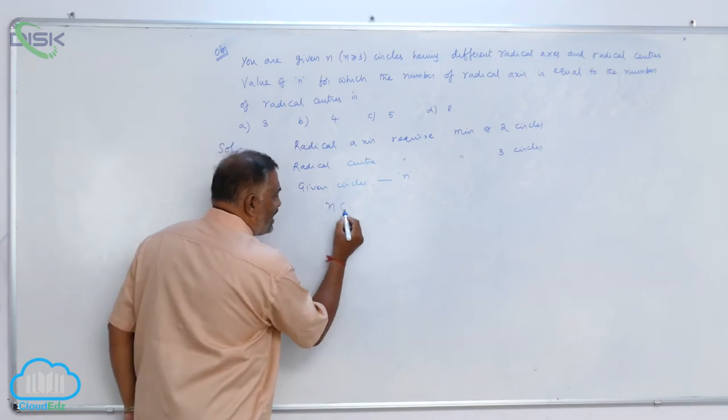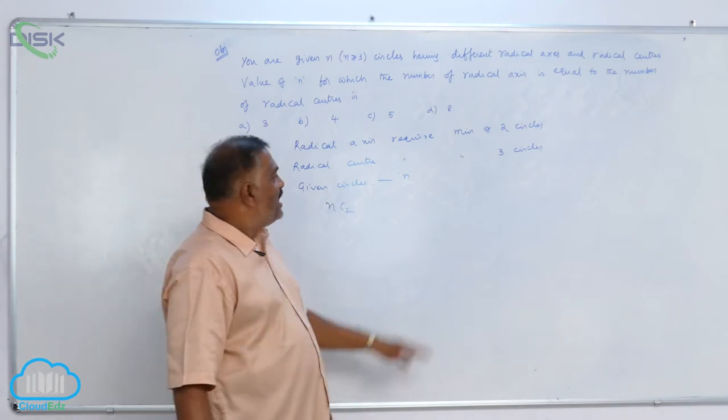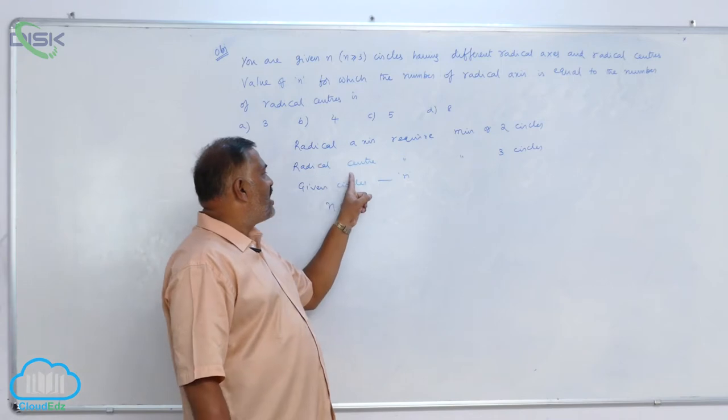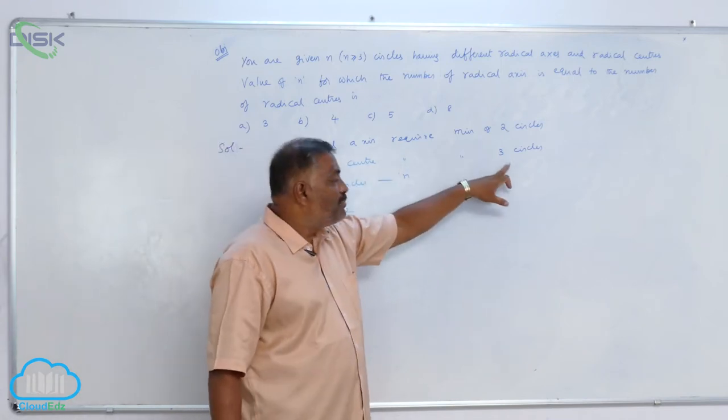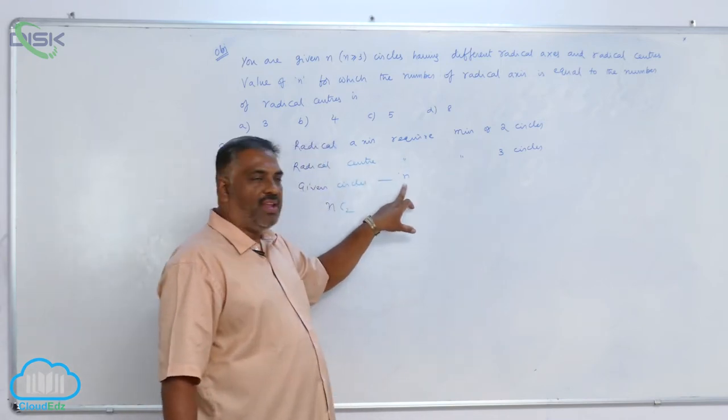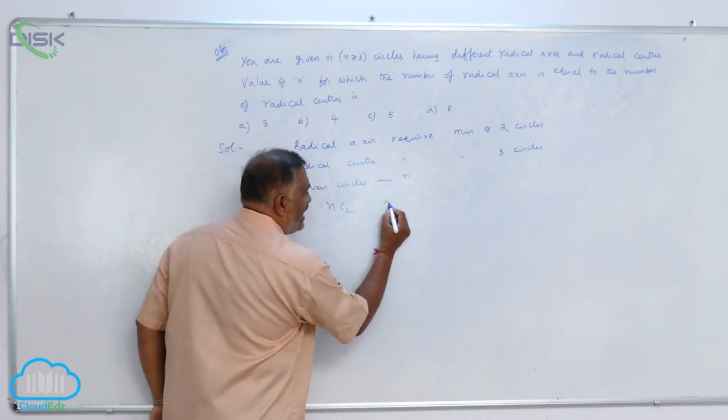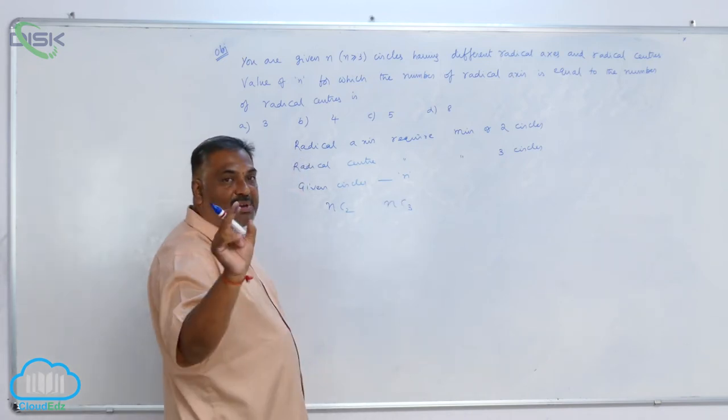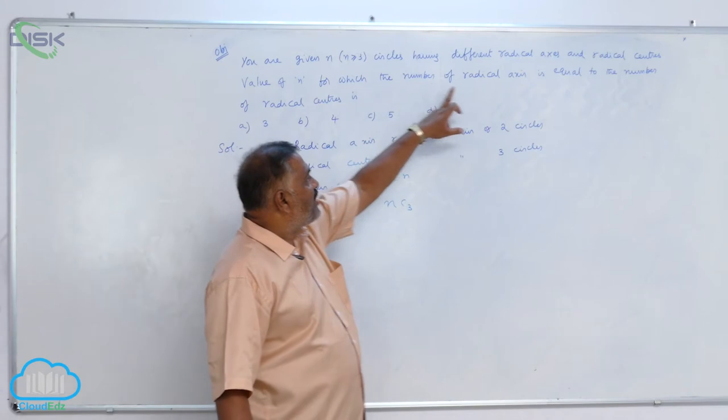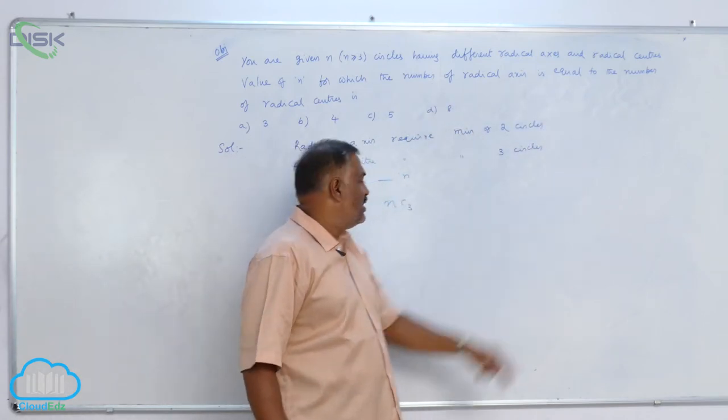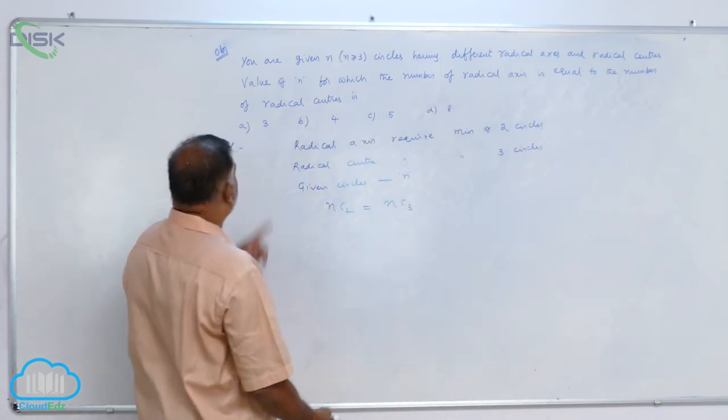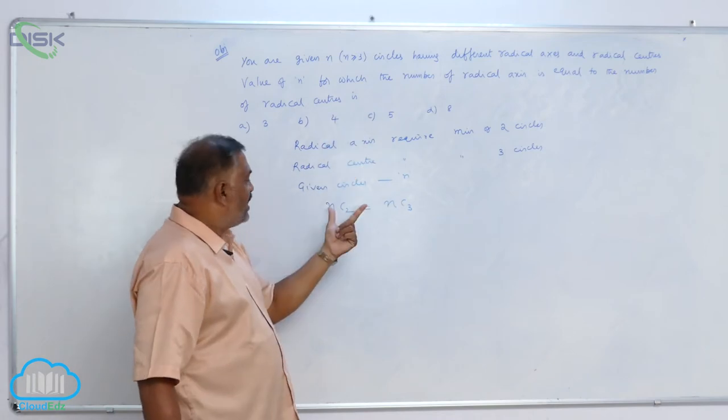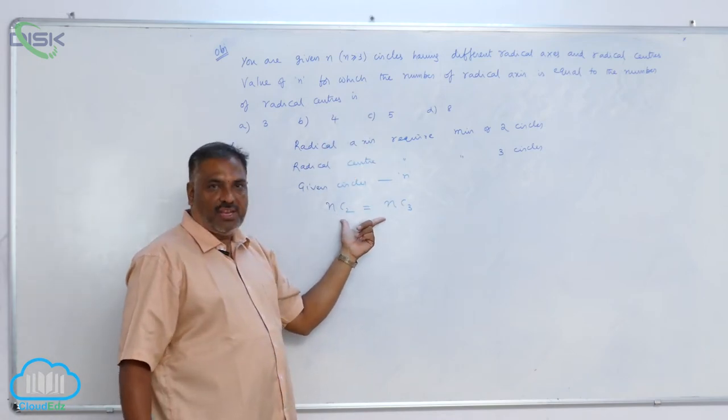In the same fashion, the number of radical centers - minimum three circles are required out of N, which can be selected in NC3 ways. As per the problem, number of radical axes equals number of radical centers, so we need to calculate the value of N.